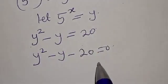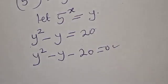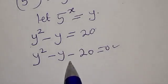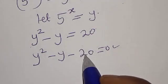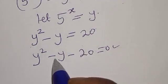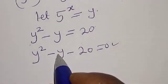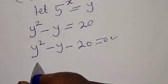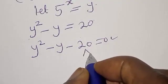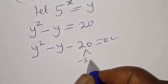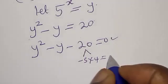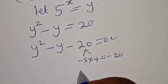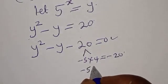This is a quadratic equation which can be solved by either factorization or using the quadratic formula. In this case I'm going to use the factorization method. We look for two numbers such that their product gives minus 20 and their sum gives minus 1, because the coefficient of y here is minus 1. We find minus 5 multiplied by 4 gives minus 20, and minus 5 plus 4 gives minus 1.